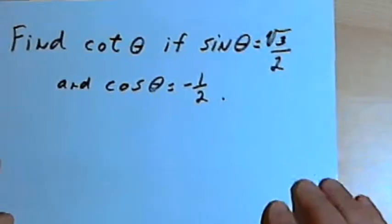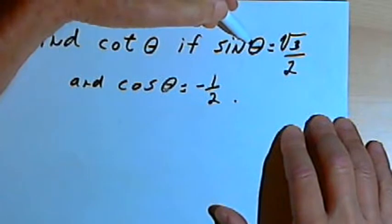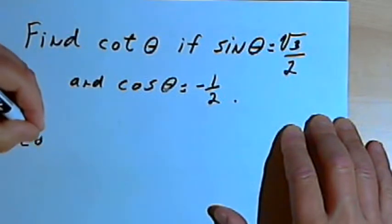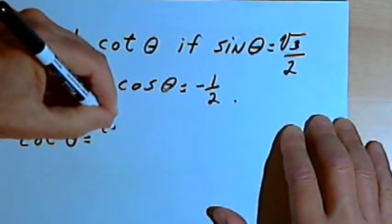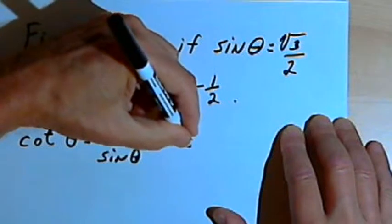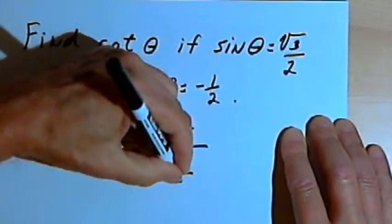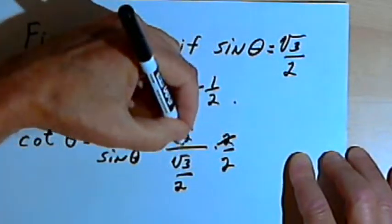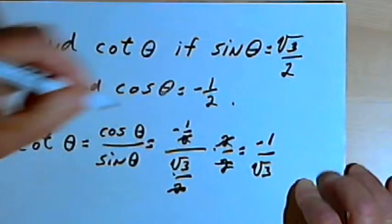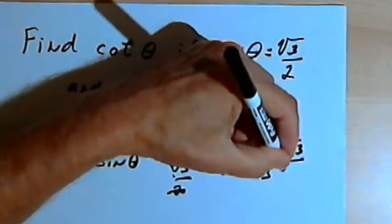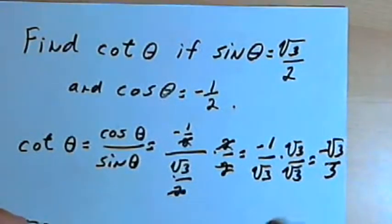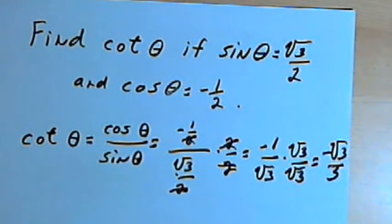And here's the last one. Find the cotangent of theta if the sine of theta equals the square root of 3 over 2 and the cosine of theta equals negative 1 half. The cotangent of theta equals the cosine of theta over the sine of theta. The cosine is negative 1 half and the sine is the square root of 3 over 2. Multiplying by 2 over 2 simplifies to negative 1 over the square root of 3. Then multiplying by the square root of 3 over the square root of 3 to rationalize gives negative square root of 3 over 3. So that's about it — take care, I'll see you next time.